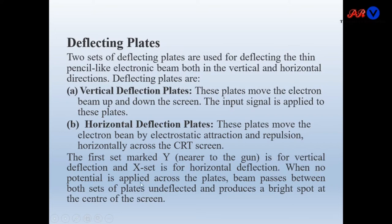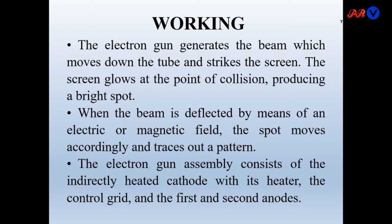When no potential is applied across the plates, the beam passes between both sets of plates undeflected, producing a bright spot at the center of the screen. So when no potential is applied, you will find a spot at the center of the screen.